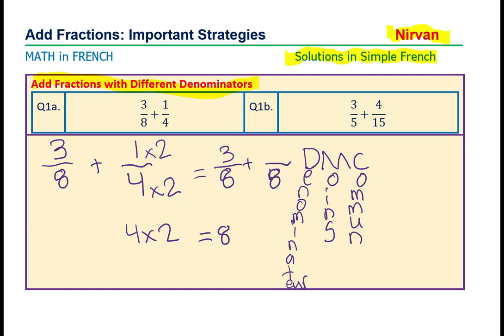nous avons trois sur huit plus un sur deux sur huit. Désolé. Trois plus deux égale cinq et le dénominateur reste la même.